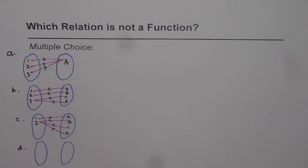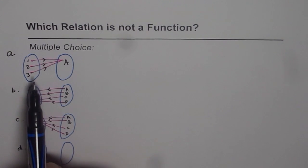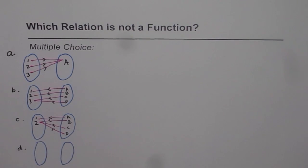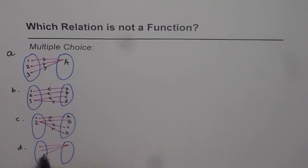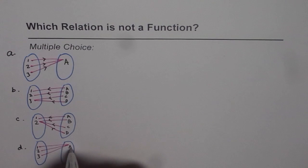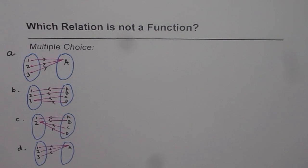You need to figure out from these choices which relation is not a function. If it is not a function, then that is your answer. Let me add one more mapping diagram: numbers 1, 2, 3 on one side with A on the other, and an arrow like this. Figure out which one of these is not a function — remember, more than one solution is possible.